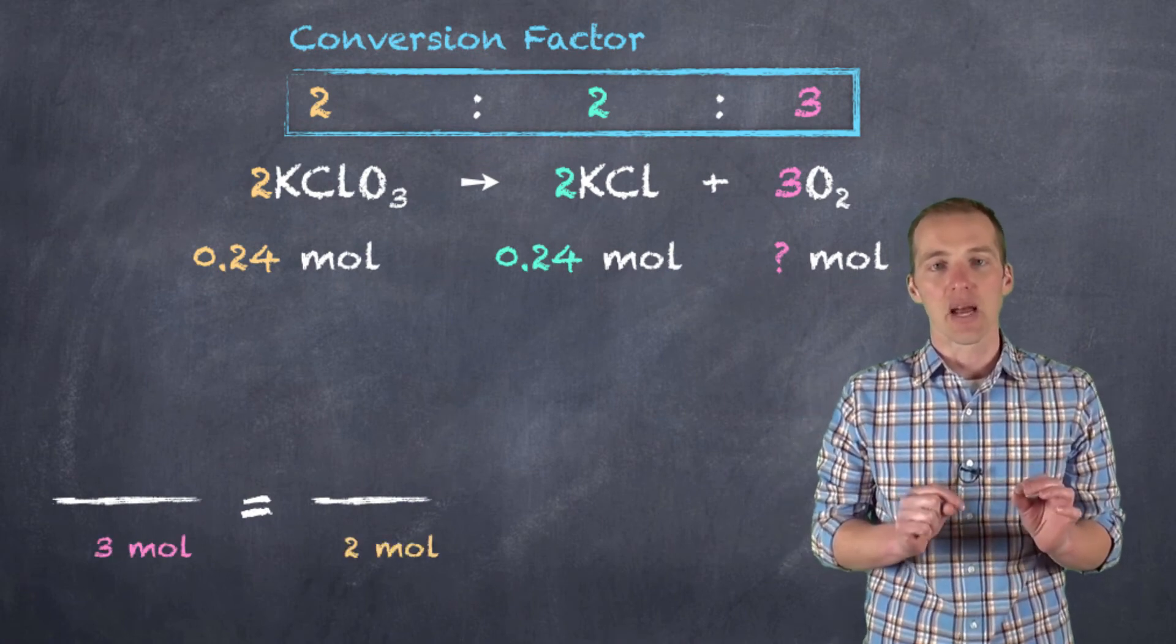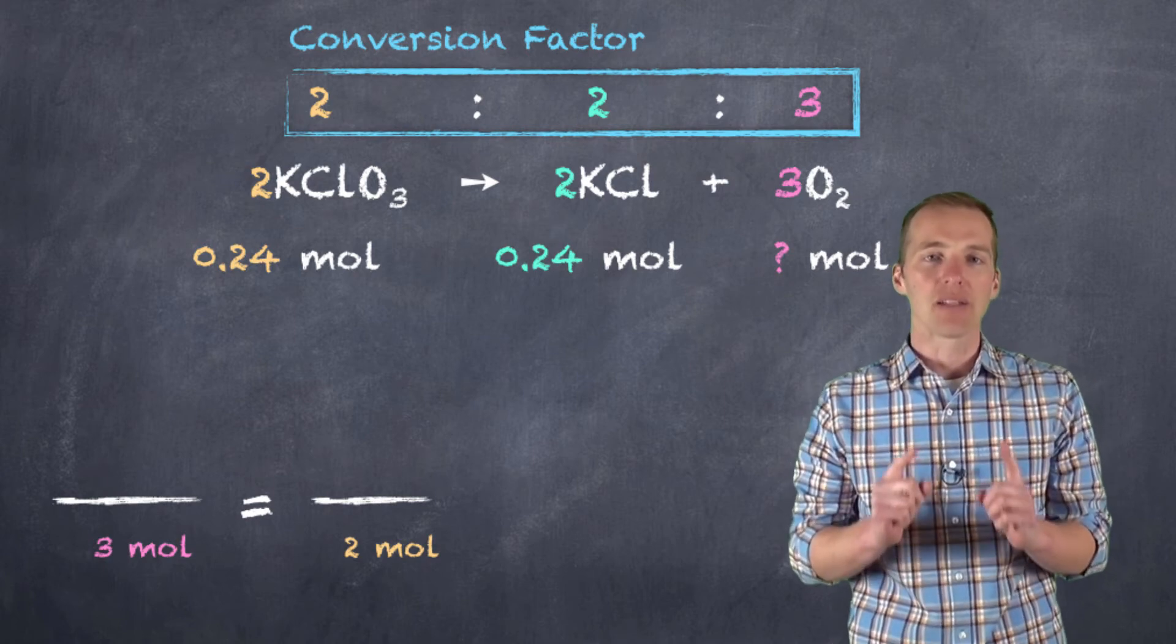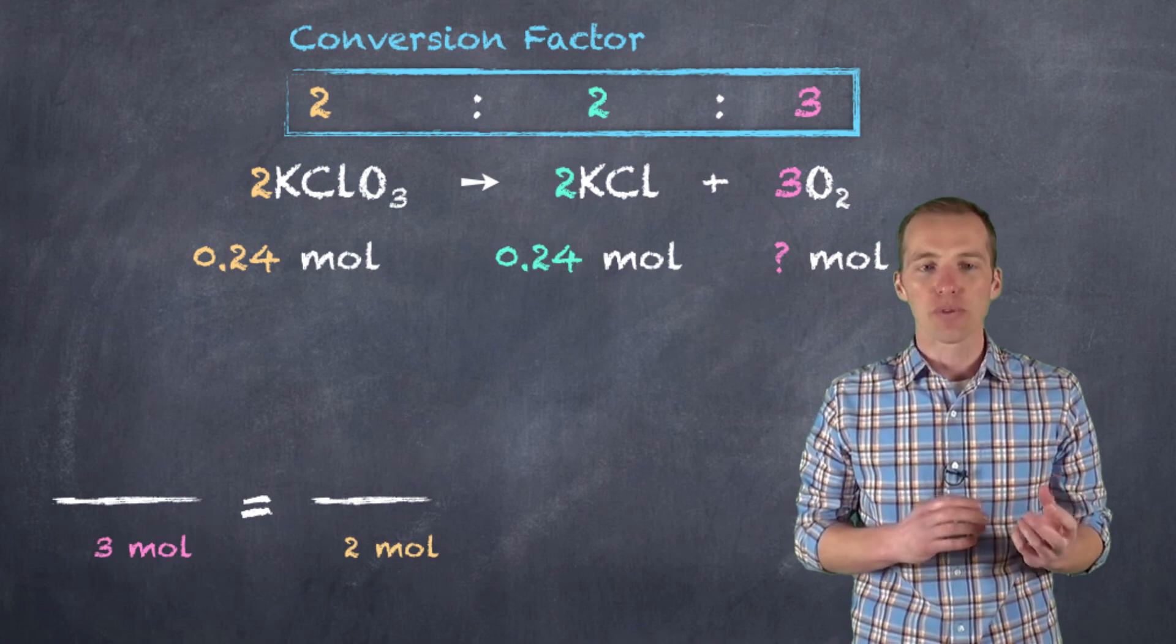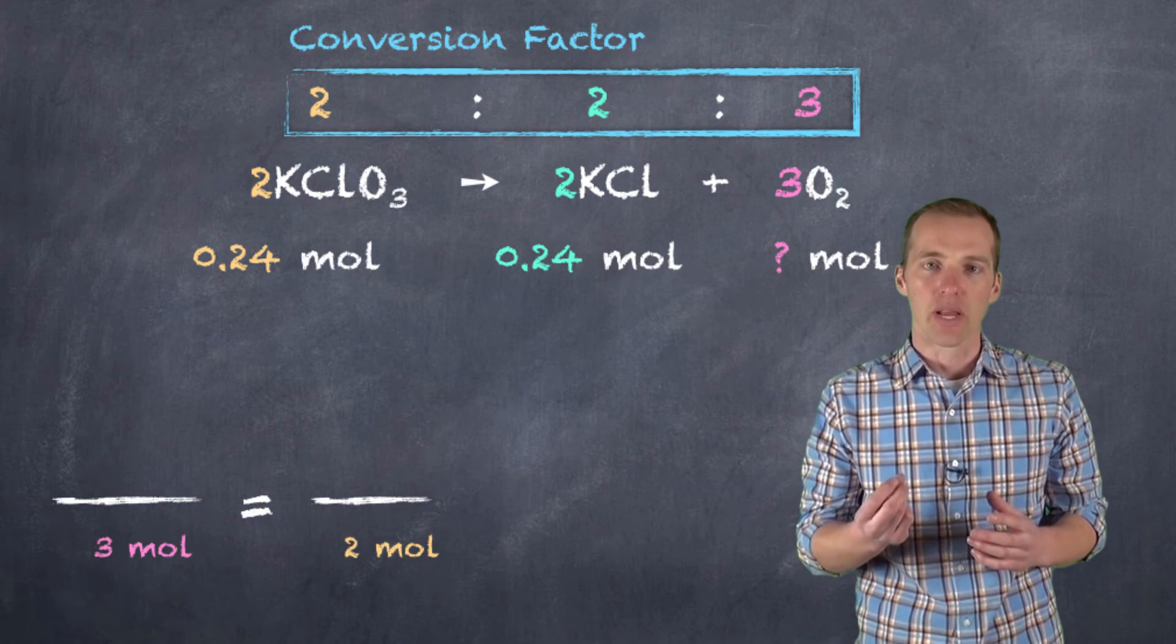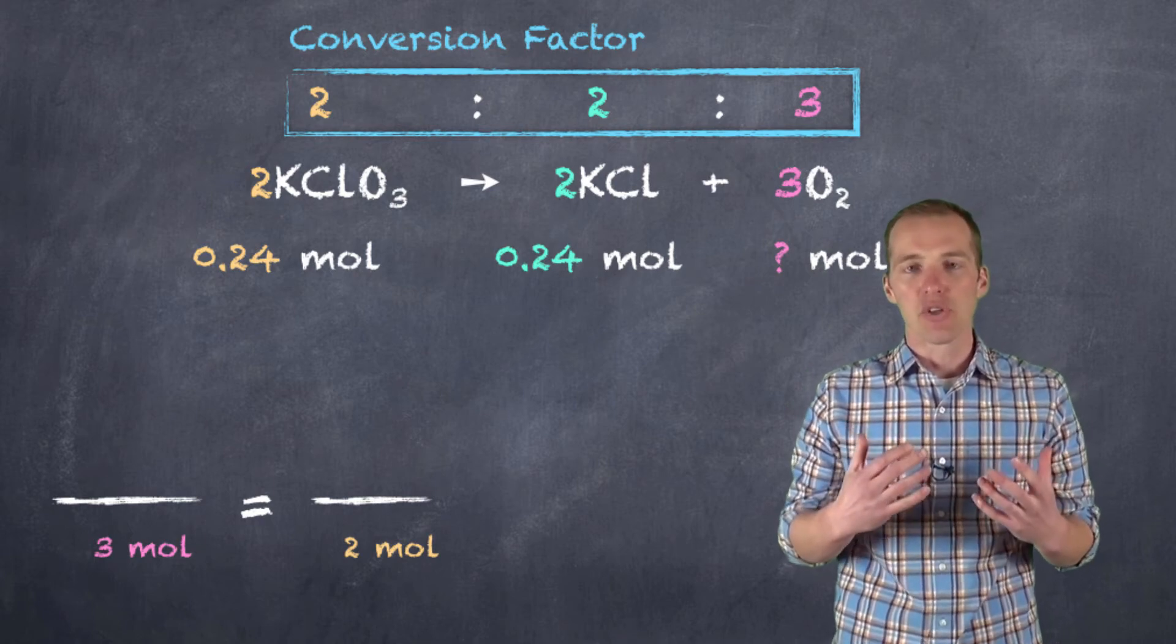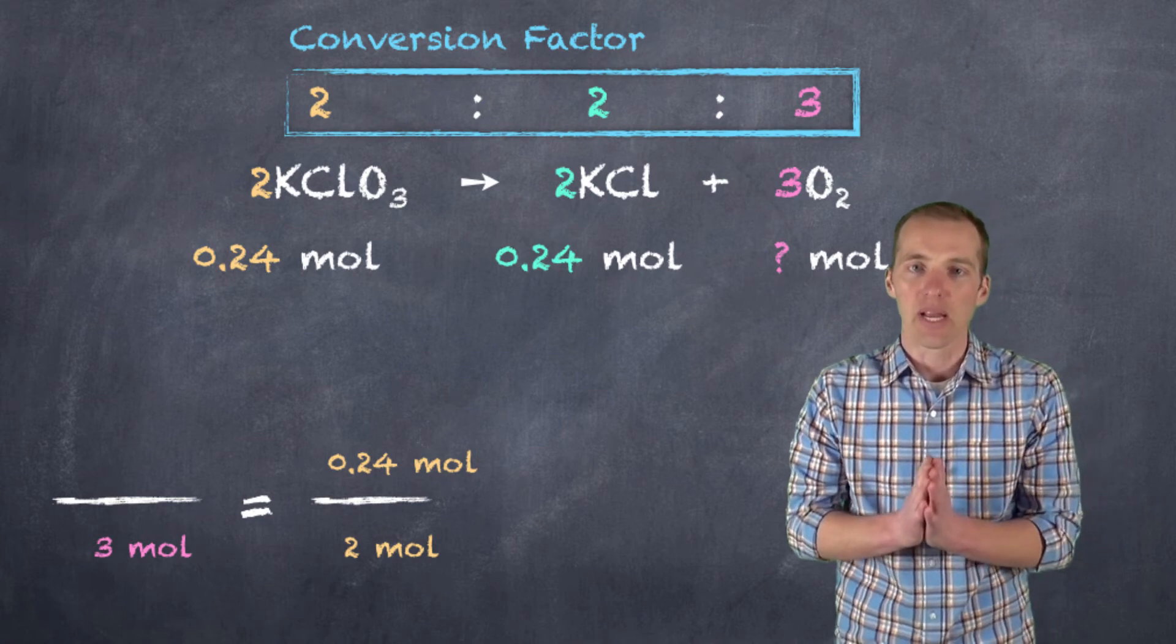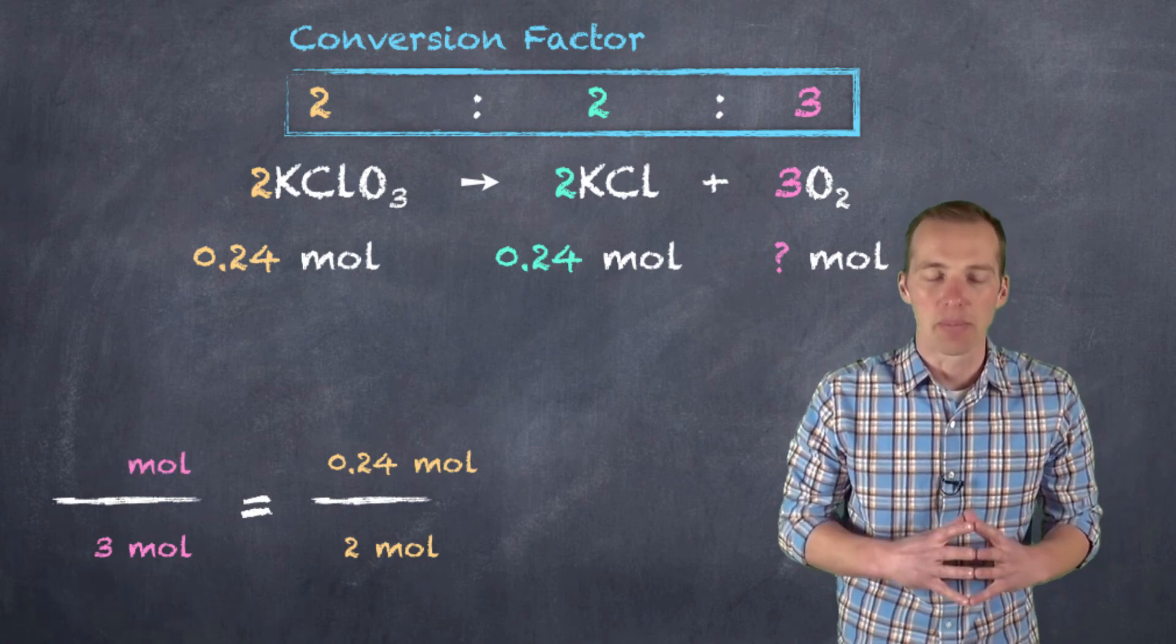And we can see here that I'm going to set up in the denominator on the bottom the established ratio from the balanced chemical equation using the coefficients. Three moles of my unknown oxygen gas to two moles of my known, the potassium chlorate. And then up above in the numerator, I'm going to set my 0.24 moles of potassium chlorate and try and figure out how many moles of oxygen gas are going to be produced here.